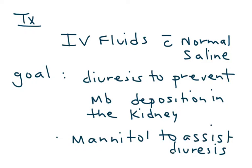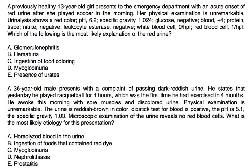So now let's look at a few clinical vignettes. A previously healthy 13-year-old girl presents to the emergency department with an acute onset of red urine after she played soccer in the morning. Her physical exam is unremarkable. Urinalysis shows a red color, pH of 6.2, specific gravity of 1.024, glucose negative, blood is plus four.